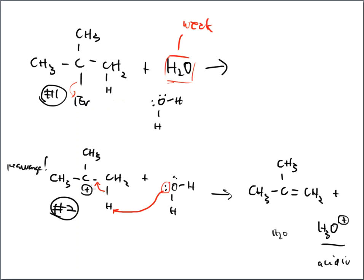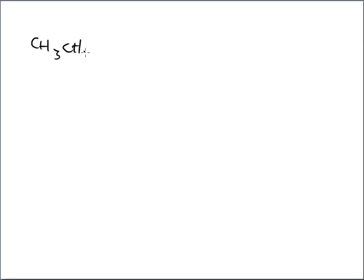Note that in this first E1 example, the E1 and E2 products were the same — identical to the very first E2 example. So E2 and E1 can end up with the same products, just like SN2 and SN1 can. Now let's look at another E1 example.